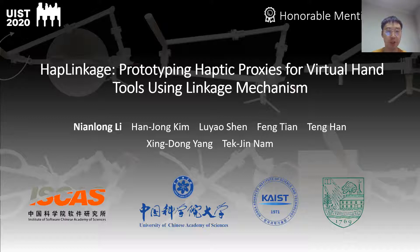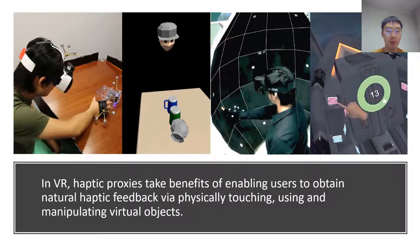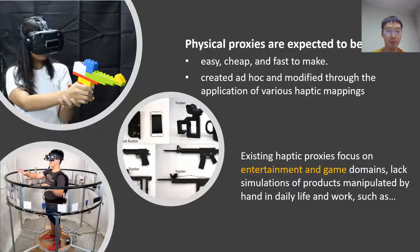HapLinkage: prototyping haptic proxies for virtual hand tools using linkage mechanisms. In virtual reality, haptic proxies enable users to obtain natural haptic feedback via physically touching, using, and manipulating virtual objects. Physical proxies are expected to be easy, cheap, fast to make, can be created ad hoc and modified through the application of various haptic mappings.